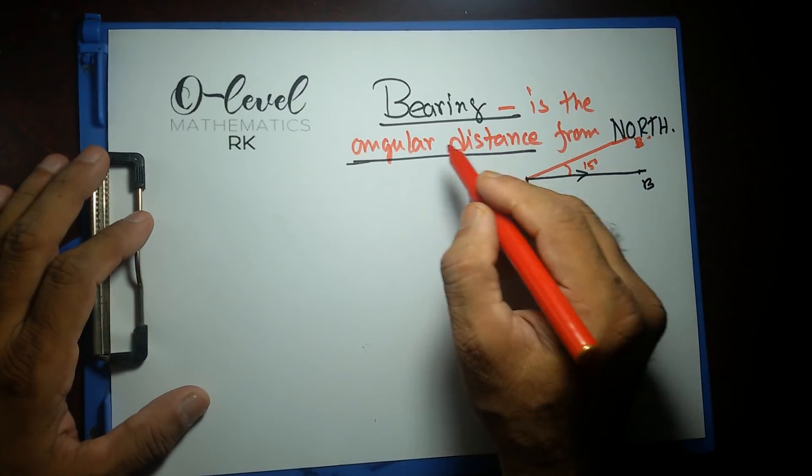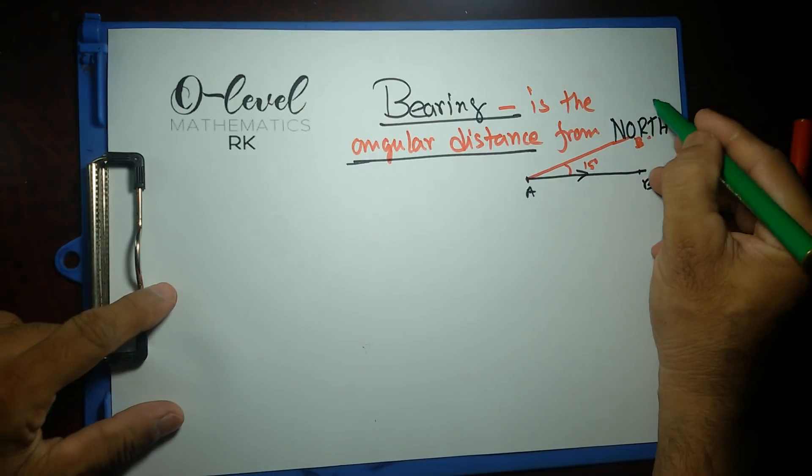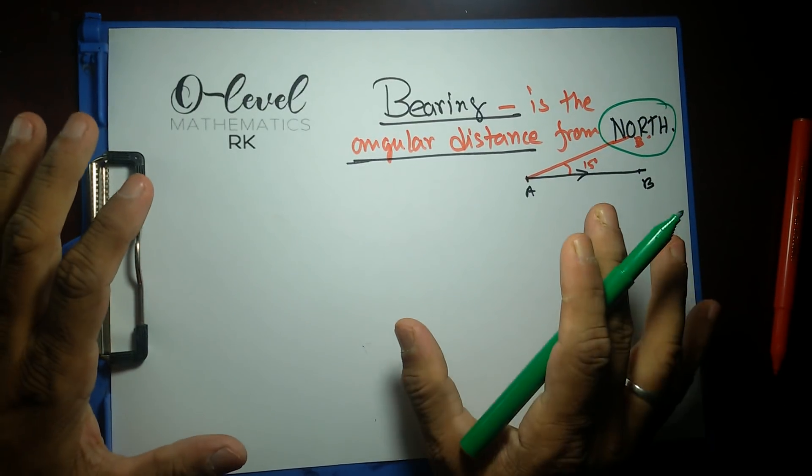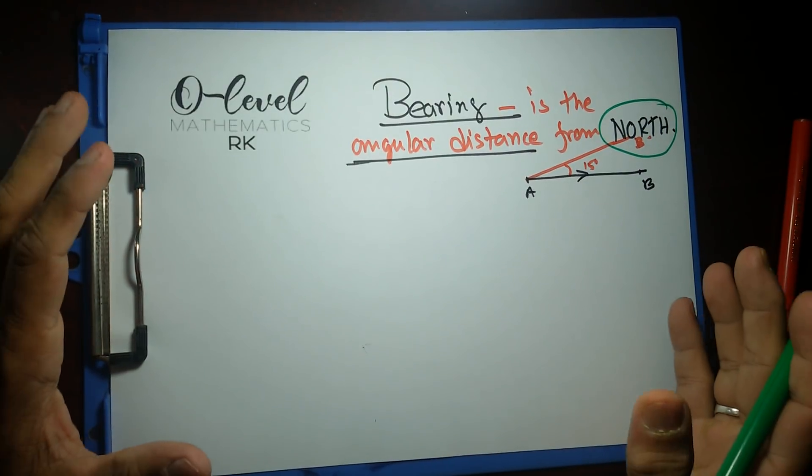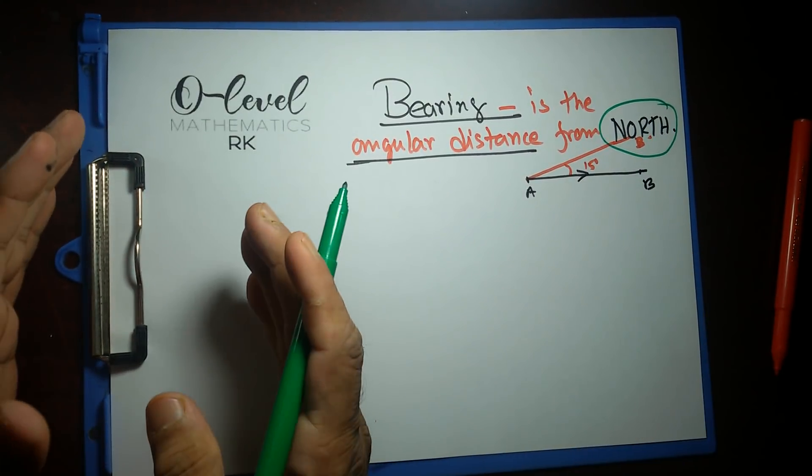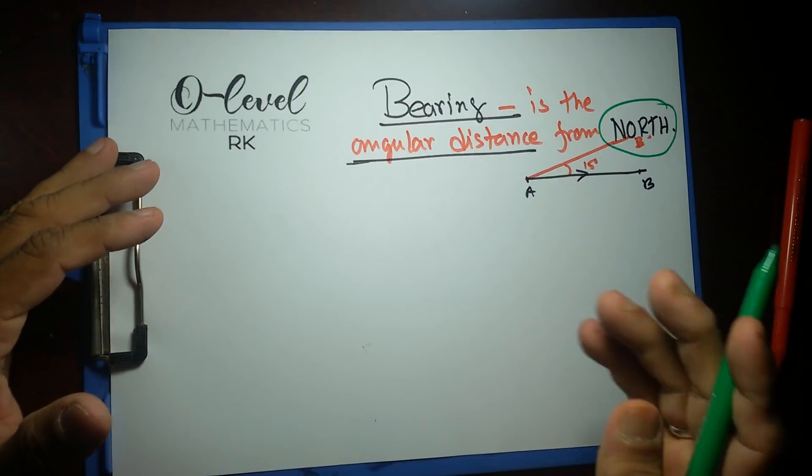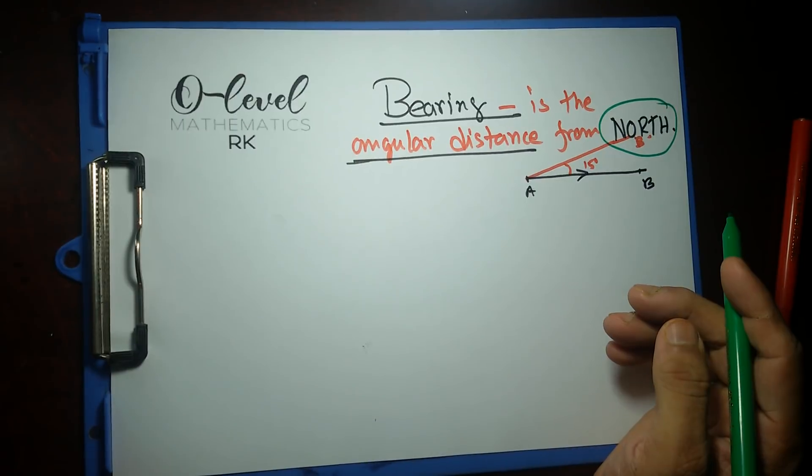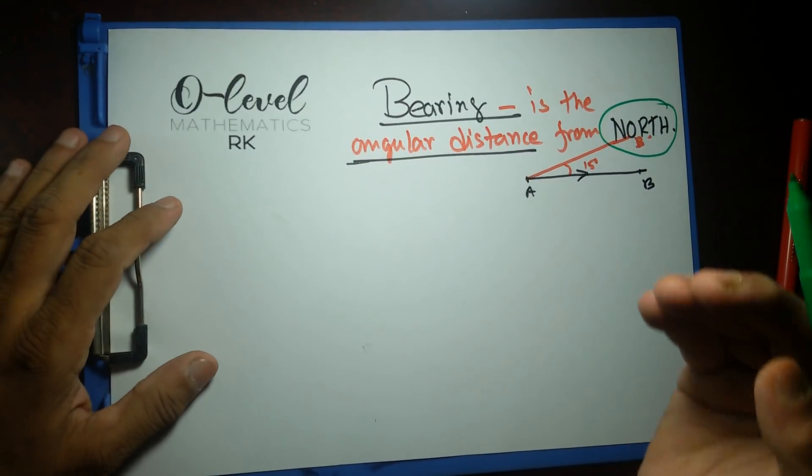Now bearing says angular distance from north. Where is north? In our practical life wherever you go, it's very hard to find out which side is north, which side is south, east, or west. Probably if you're really good at direction, you look at the sun and you'll be able to tell which way is north.